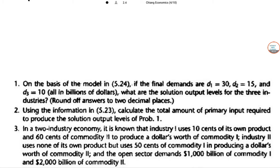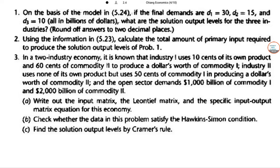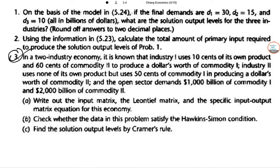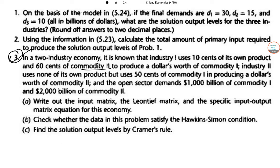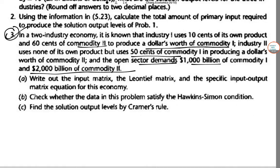So we will concentrate on the direct questions. In question 7, industry 1 uses 10 cents of its own product and 60 cents of commodity 2 per dollar's worth of commodity 1, and industry 2 uses 50 cents of commodity 1 and its own product per dollar's worth of commodity 2. The open sector demands are 1000 billion dollars for commodity 1 and 2000 billion dollars for commodity 2. Write the input-output matrix.